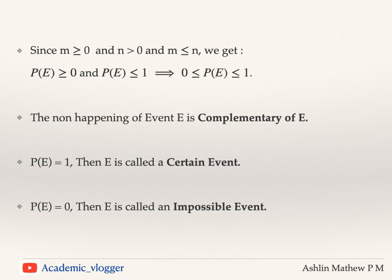If the probability of E equals 1, then it is called a certain event. If the probability of E equals 0, then it is called an impossible event. A certain event is also known as a sure event, and the other is called an impossible event or a null event.